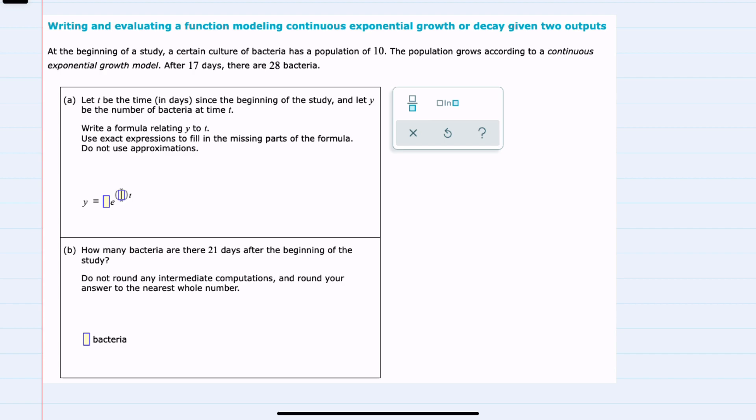In this example, there's a certain culture of bacteria with a population of 10. The population grows with continuous exponential growth, and after 17 days, there are 28 bacteria. For question A, we're asked to fill in the missing values in the equation representing this exponential growth.